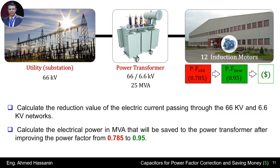Also, we want to calculate the reduction in electric current passing through the 66 kilovolts network and the 6.6 kilovolts network. Additionally, we want to calculate the electrical power in megavolt-amperes that will be saved in the power transformer after installing the capacitor bank, freeing capacity to add new loads.